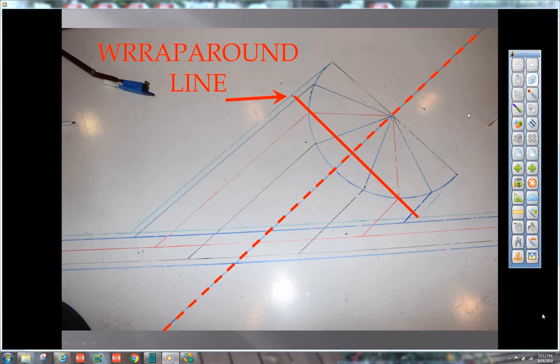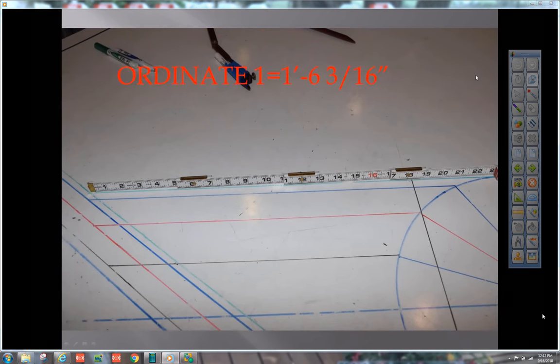So number nine is going to be zero. Everything will be measured off of this. Put your square perpendicular to the center line of the branch until the top of this pipe will represent zero. That would be ordinate nine. Let's record them.